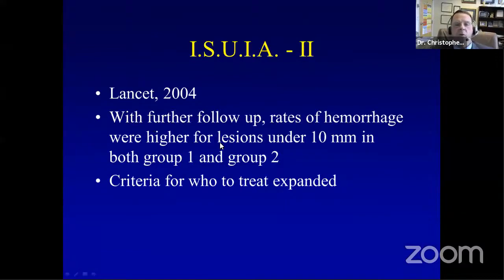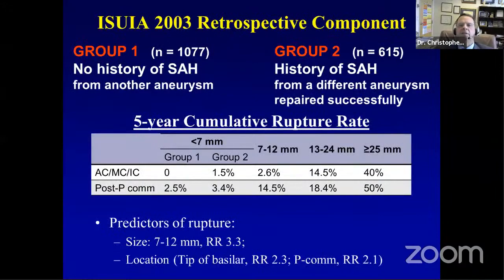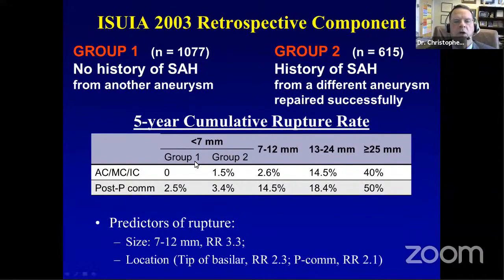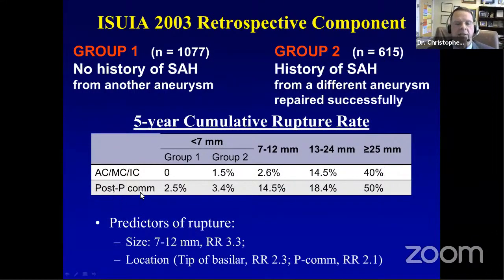In the 2003 follow-up study, with more follow-up time, more aneurysms were found to bleed, and the size cutoff was revised to 7 millimeters. The data continued to show stratification not only by size but by site — the posterior location had a higher risk of rupture. Juvela and others in Scandinavia published natural history data from a captured population followed for a median of almost 20 years, finding a rupture rate just over 1% per year — 10% at 10 years, 20% at 20 years, 30% at 30 years. Younger age, larger size, and smoking were associated with higher rupture risk.